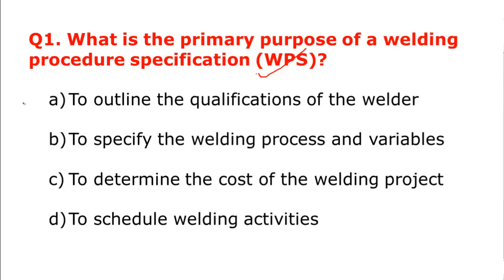Let me read the options. Option A is to outline the qualifications of the welder. Option B is to specify the welding process and variables. Option C is to determine the cost of the welding project. Option D is to schedule welding activity. Option A, C, and D are all wrong. WPS is not meant for scheduling or cost determination.